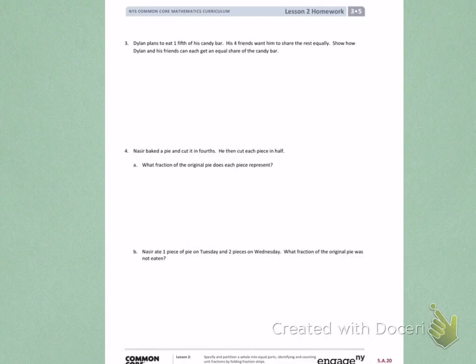Let's first look at some important information. We know that Dylan wants to eat one-fifth of the candy bar. We also know that his four friends want him to share it equally.